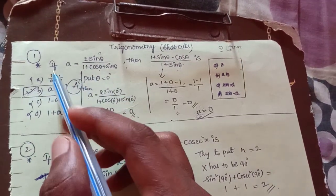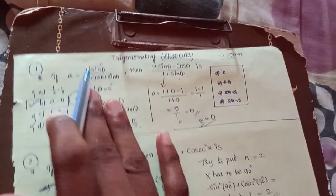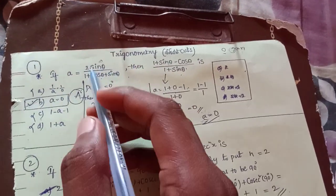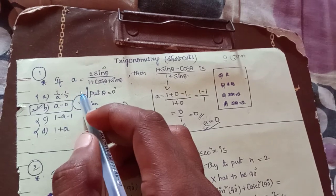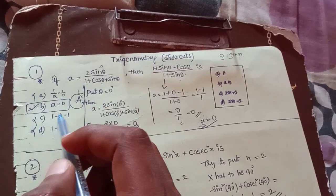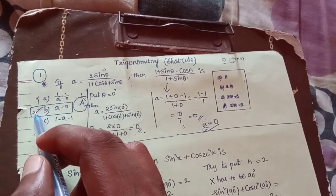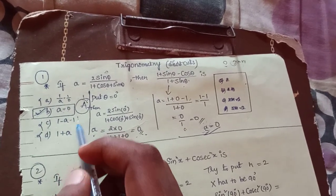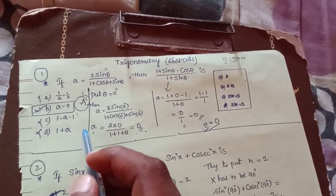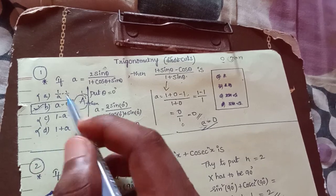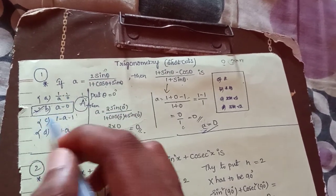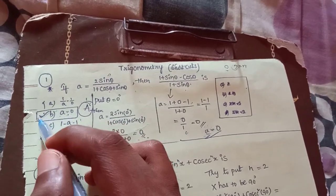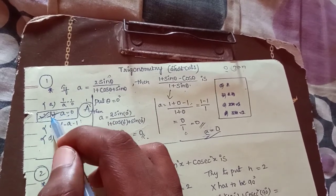So we can choose the options here. If you choose 1 by a is equal to 1 by 0, and a is equal to 0, this case is satisfied. Next, 1 minus a is 1, and 1 plus a is 1, so that case is also satisfied. Second case, b is equal to 0; if this case is satisfied, this case is satisfied.